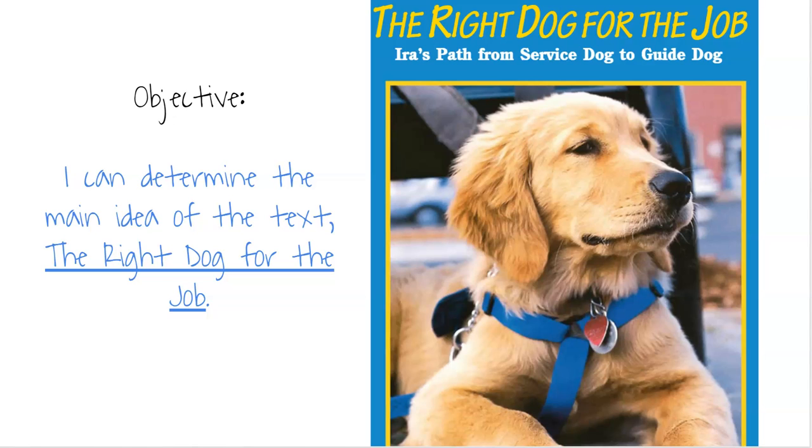Okay fourth grade friends, we are back at our reading today and still looking at The Right Dog for the Job, and again practicing the main idea of the text. We're also going to focus on finding some supporting details that help us understand better what the main idea is.